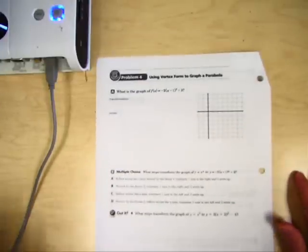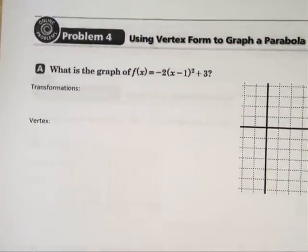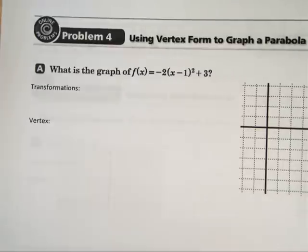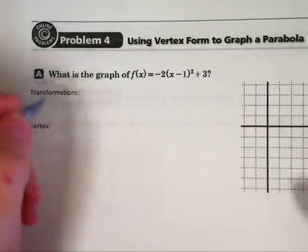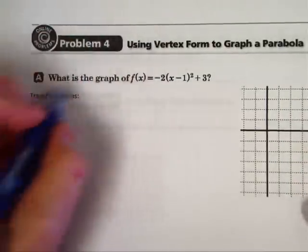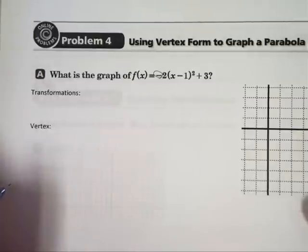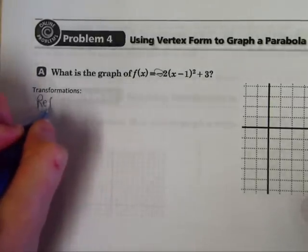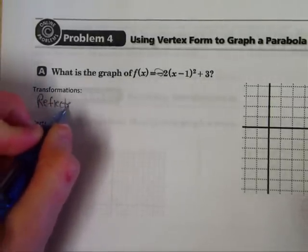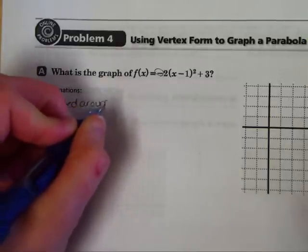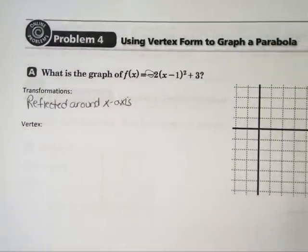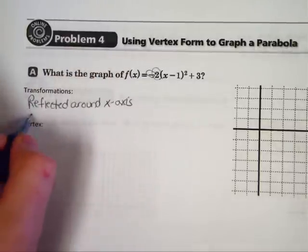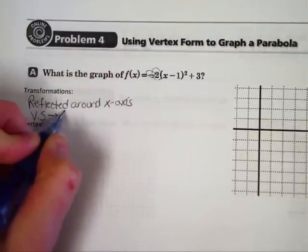In the next problem, we're going to graph using multiple transformations. What is the graph of f(x) = -2(x - 1)² + 3? Now the transformations, let's talk about the negative on the outside. This negative means it's going to be reflected around the x-axis. That just means it's going to look upside down. The 2 on the outside means that it is vertically stretched by a factor of 2.